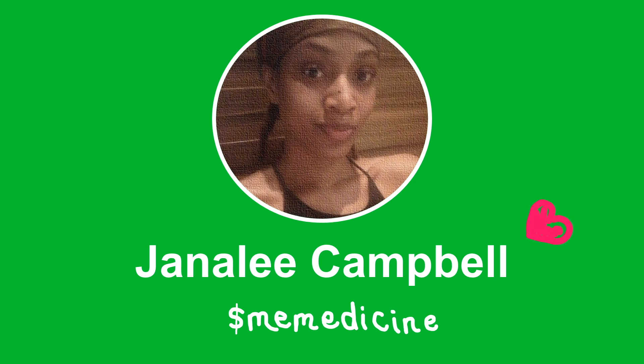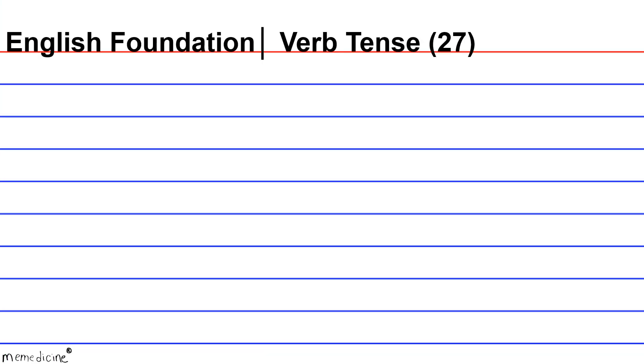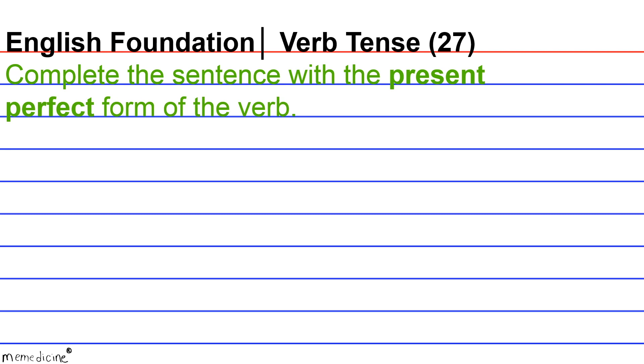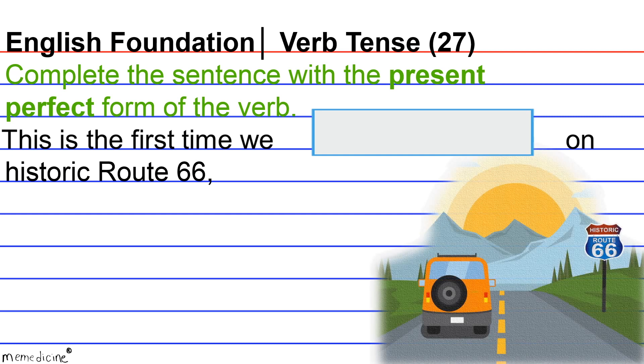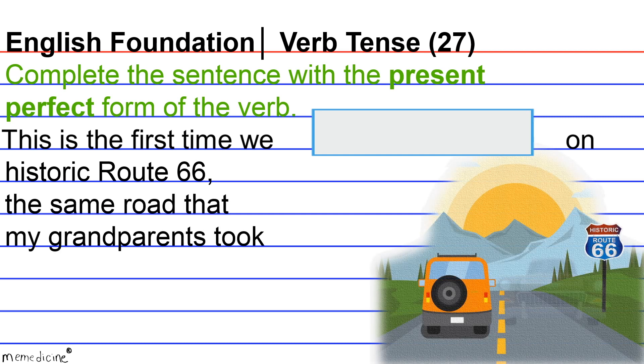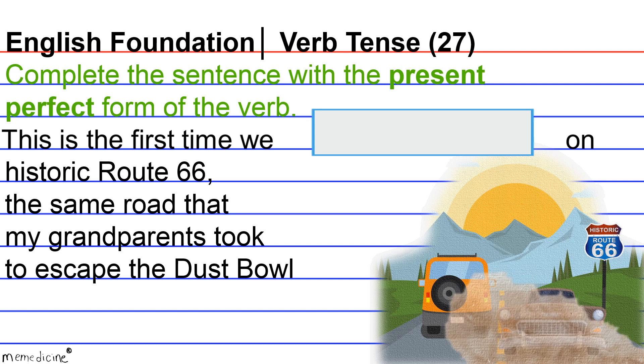English Foundation, verb tense, question 27. Complete the sentence with the present perfect form of the verb. This is the first time we blank on historic route 66, the same road that my grandparents took to escape the Dust Bowl in 1935.